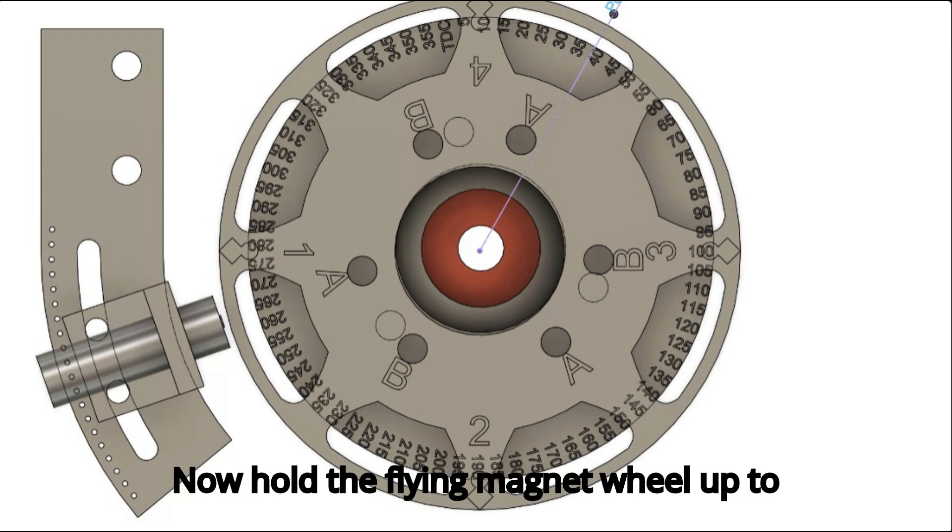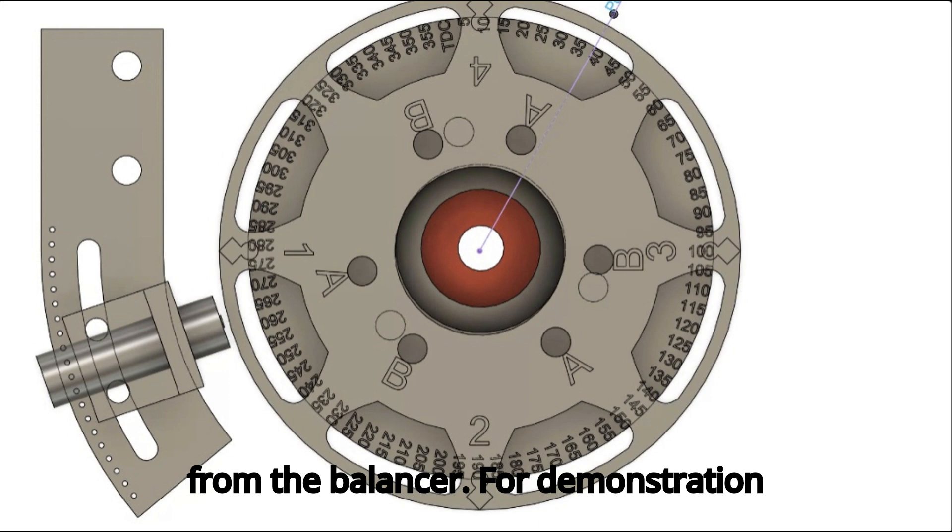Now hold the flying magnet wheel up to the balancer with the arrow facing away from the balancer. For demonstration purposes, I have labeled each of the four magnets at the outer edge of the wheel and the six balancer bolt holes.